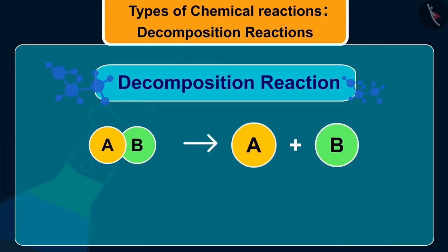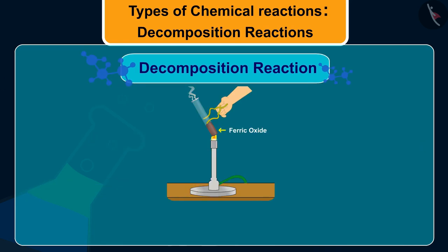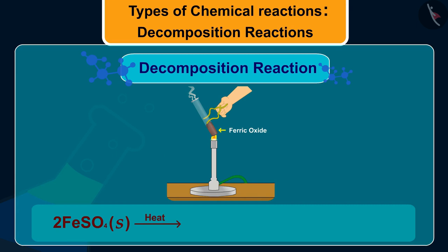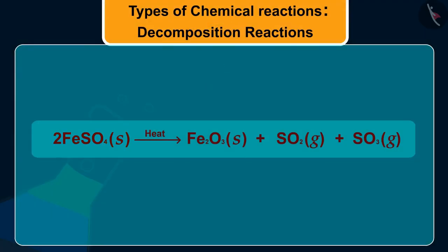So students, this is an example of decomposition reaction. Why? Because one reactant, that is ferrous sulfate, is breaking down to produce ferric oxide, sulfur dioxide, and sulfur trioxide. In this reaction you can observe that a single reactant breaks down to give simpler products. This is a decomposition reaction.